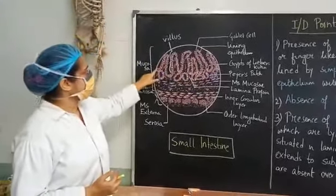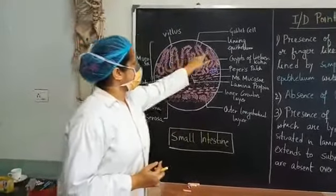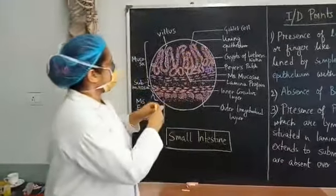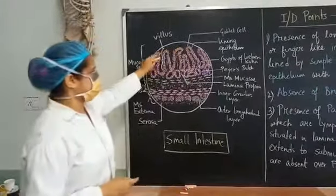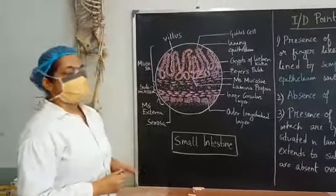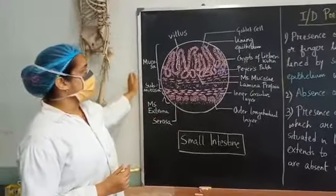Which is lined by simple columnar epithelium. These are the lining epithelium. Also there are goblet cells present. These small gaps are representing the goblet cells.